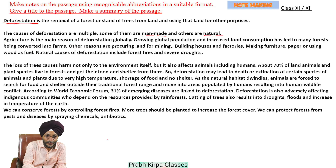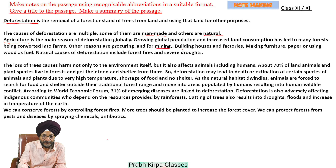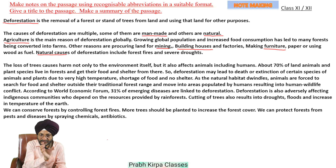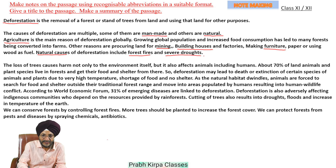Manmade causes include agriculture; other reasons are mining, building houses, and furniture. For natural causes, the heading will be 'Natural Causes' and the subheadings will be forest fires and severe droughts.